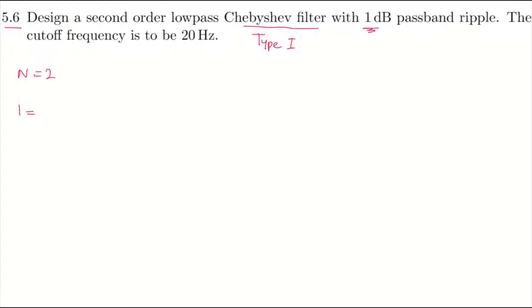1dB actually equals 20 times log of Ap to the base of 10, and that means Ap equals 10 to the power of 1 over 20. Calculate this.